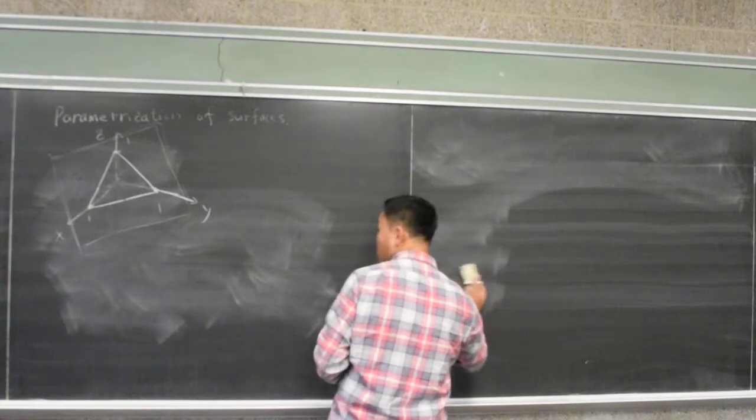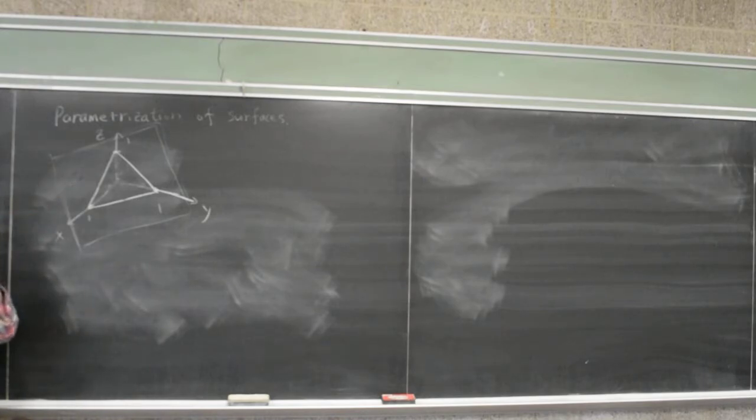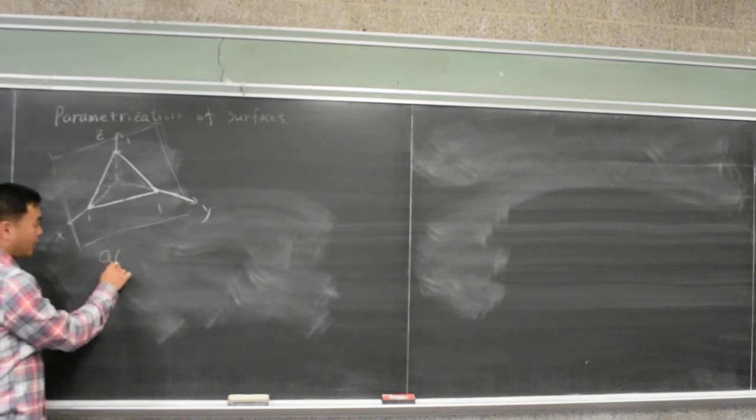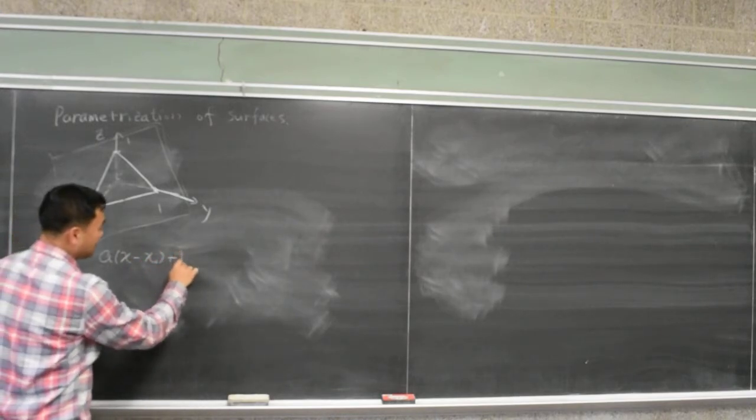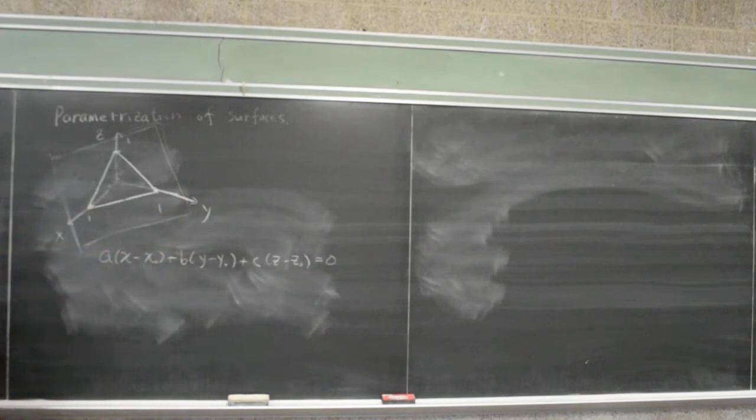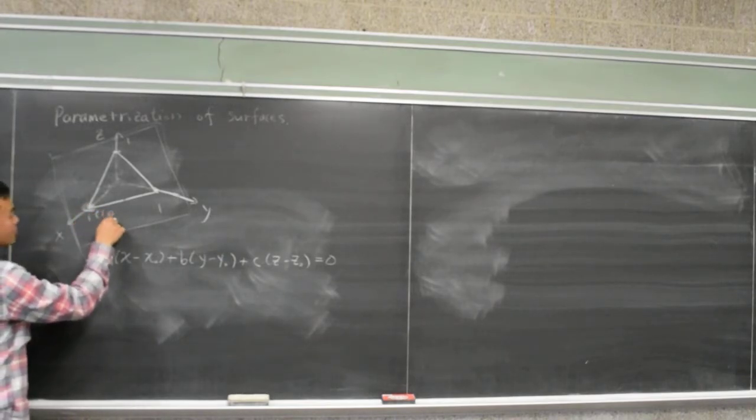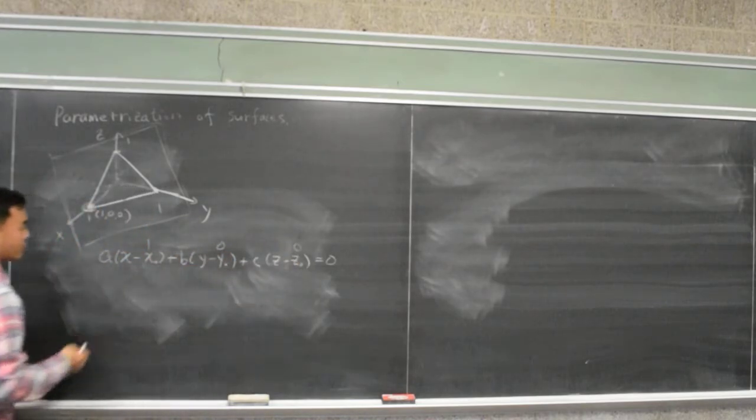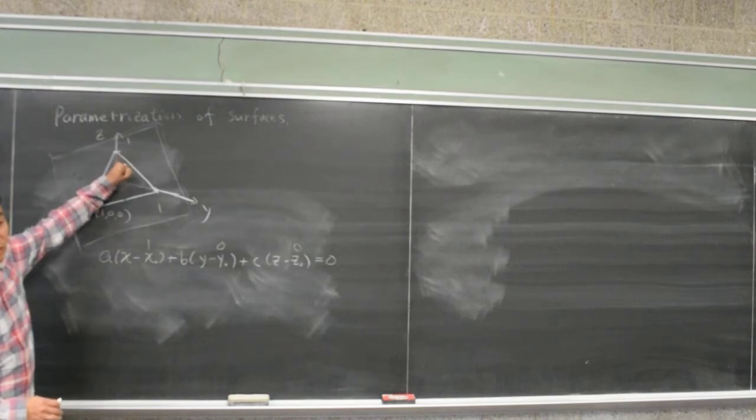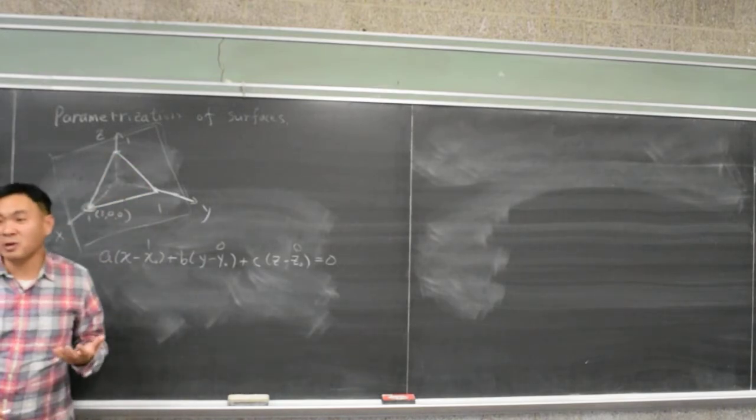So, our first goal would be to actually come up with the equation for this plane. Now, what's the equation of the plane? Can you tell me the formula for the equation of the plane? A(x - x₀) + b(y - y₀) + c(z - z₀) = 0. For x₀, y₀, z₀, I can choose any point, so if I chose this point, which is (1,0,0), I'll have that as our value. Then, we need to know a, b, c. What's the meaning of a, b, c? It's the normal vector to the plane.